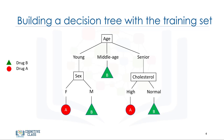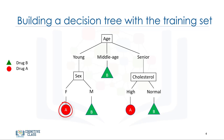On the other hand, if the patient is young or senior, we'll need more details to help us determine which drug to prescribe. The additional decision variables can be things such as cholesterol levels, gender, or blood pressure. For example, if the patient is female, then we will recommend drug A. But if the patient is male, then we'll go for drug B.